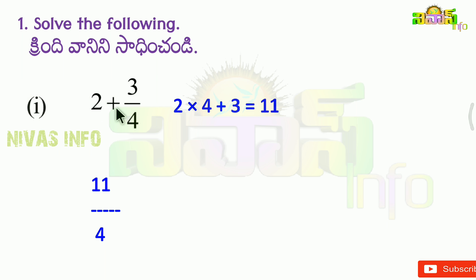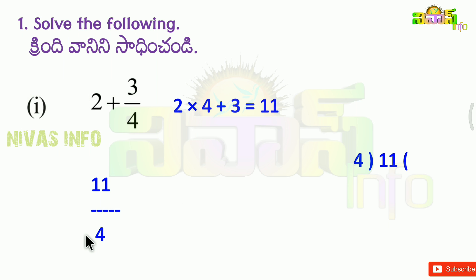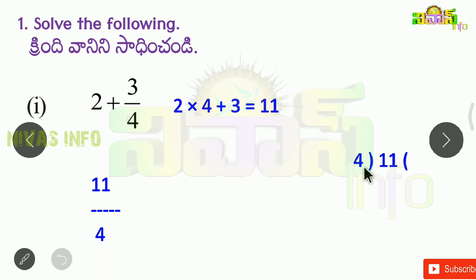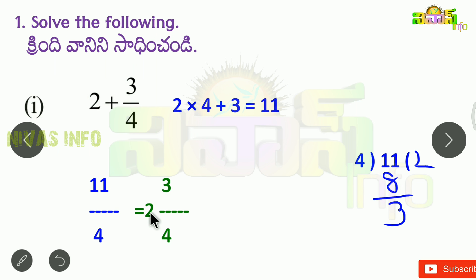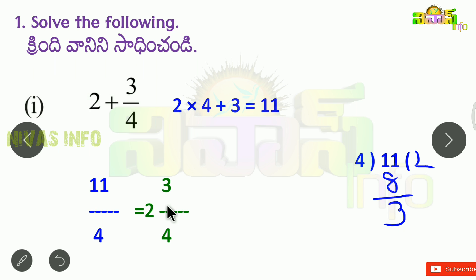This is the addition symbol. Now we divide 11 by the denominator. You can divide the numerator and denominator. The answer is 2, 3 by 4.